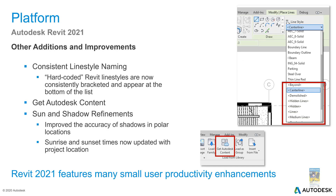There are other tweaks as well. For example, consistent line style naming: all hard-coded Revit line styles are now in brackets at the bottom of the list, while any custom line styles you've created are at the top in numerical and alphabetical order. There's also a 'get Autodesk content' button to jump to Autodesk's site, and improved accuracy of shadows and sun settings.